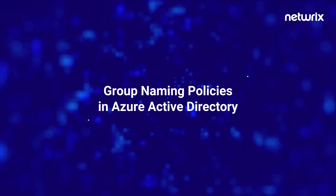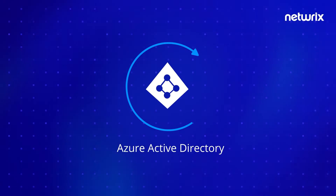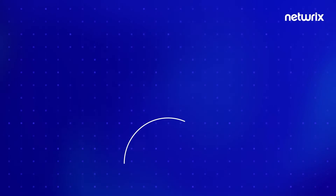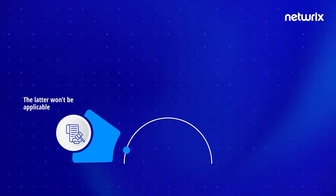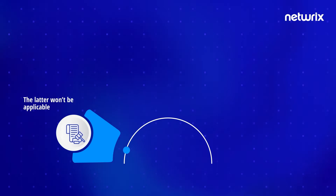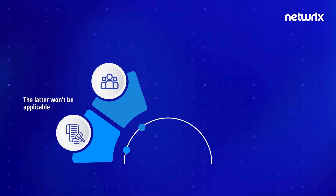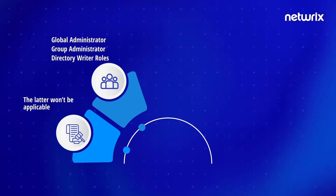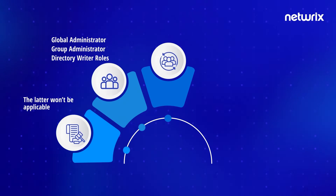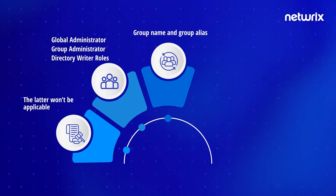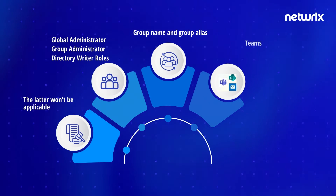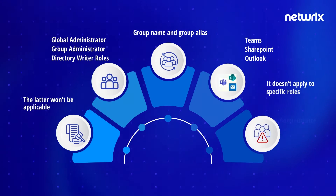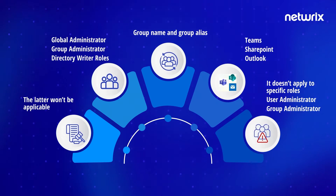For group naming policies in Azure Active Directory: if your naming policy is created in Azure AD and you already have an Exchange group naming policy in place, the latter won't be applicable. Azure AD will be relevant to the enterprise. The group naming policy in Azure AD can be configured by the global administrator, group administrator, and directory writer roles. The policy applies to both the group name and group alias, and across workloads such as Teams, SharePoint, and Outlook. It does not apply to specific roles such as the user administrator and the group administrator.